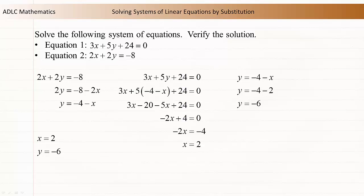The solution to the system is x = 2 and y = -6. Alternatively, we can represent this solution as the ordered pair (2, -6).